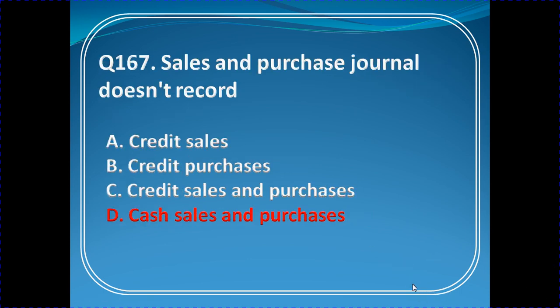Question 167: Sales and purchase journal does not record which of the following? Options: credit sales, credit purchase, credit sales and purchases, cash sales and purchases. Sales and purchase journals are meant for credit transactions only, so the answer is cash sales and cash purchases.